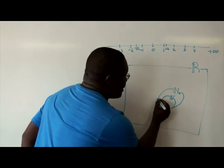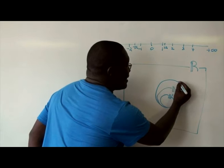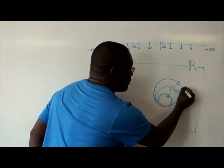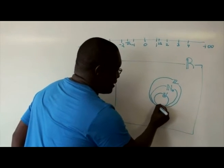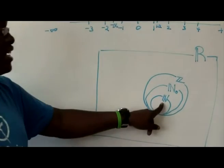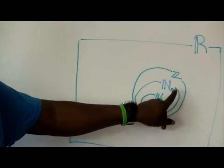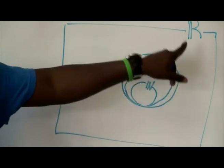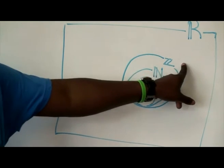All the whole numbers are integers. So, we're saying that all natural numbers are whole numbers. All whole numbers are integers.